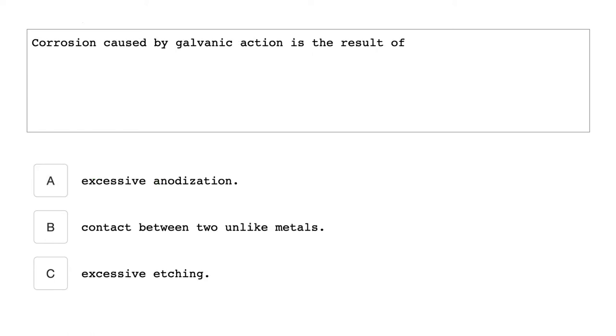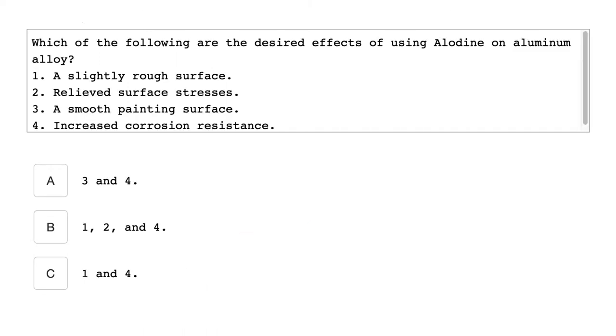Corrosion caused by galvanic action is the result of contact between two unlike metals.